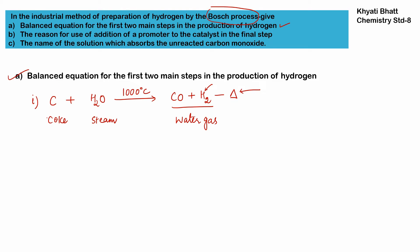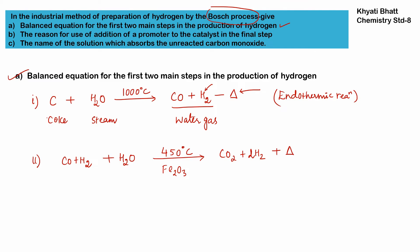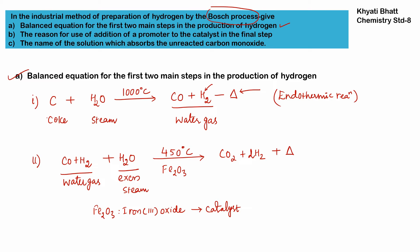The minus delta indicates this first reaction is endothermic — it absorbs heat. This reaction happens at 1000°C. In the second step, we take that mixture of water gas and some excess steam and perform the reaction at 450°C along with the catalyst, which is iron(III) oxide, Fe₂O₃.